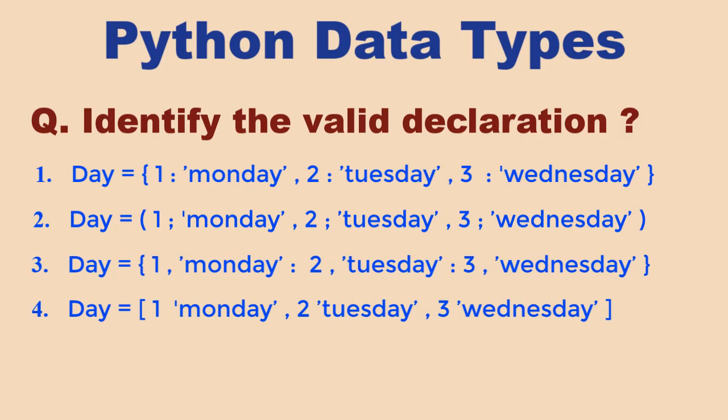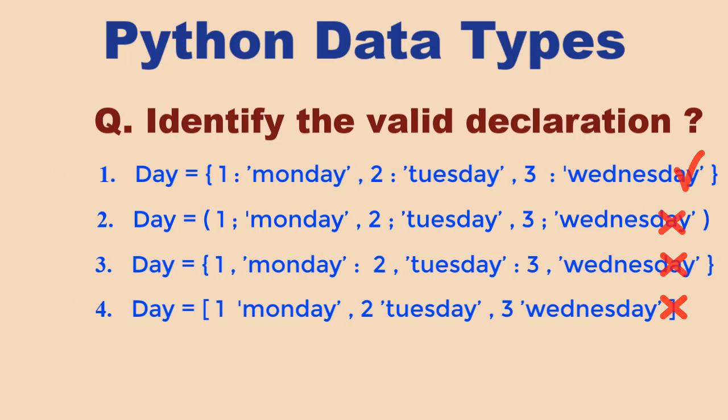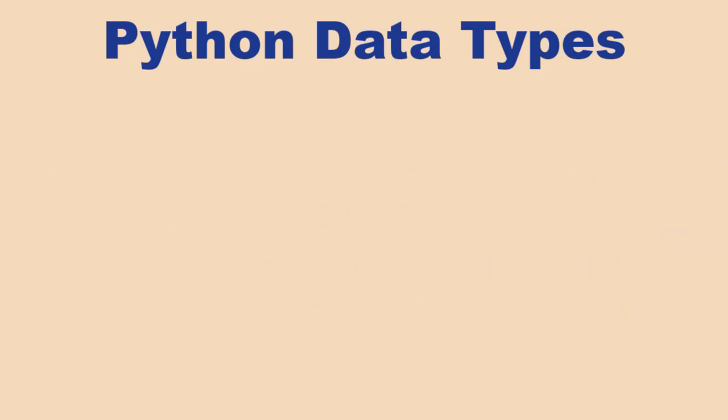Here, you know that dictionaries are enclosed in curly braces, so options two and four are ruled out. Key-value pairs are separated by a colon and by commas, so the first is the right option. You can anytime use the type function to view the data type of a variable.